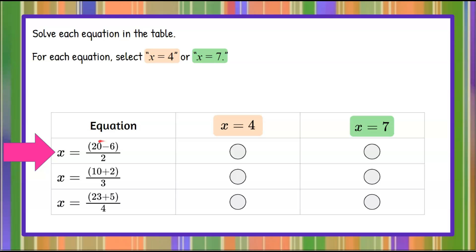x equals the quantity 20 subtract 6, all divided by 2. So the first thing we want to do is simplify our numerator and find the difference of 20 subtract 6, which is 14, and then we're going to divide by 2. 14 divided by 2 is 7. So we're going to make our answer choice in this table that that equation is equivalent to x equals 7.